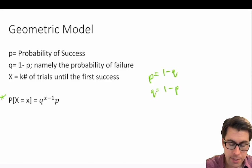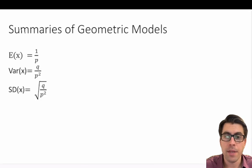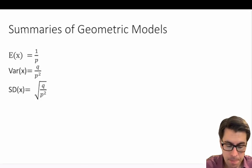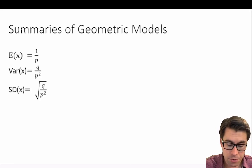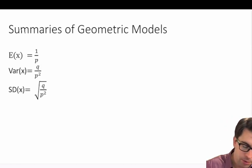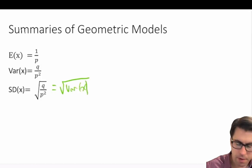Before we dive into some examples, let's think about how we calculate our expected value, variance, and standard deviation. Our expected value is simply 1 over p — that is, 1 over the probability of success. Our variance is equal to q divided by p squared. And since standard deviation equals the square root of variance, the standard deviation is equal to the square root of q divided by p squared.